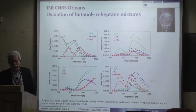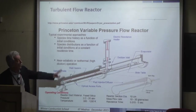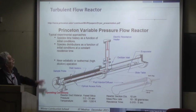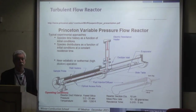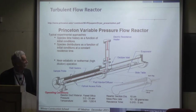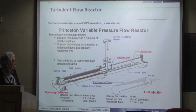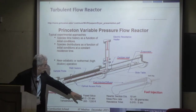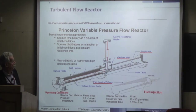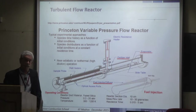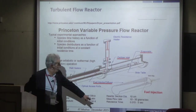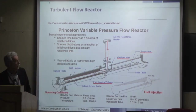After the jet stirred reactor, we move to the plug flow reactor. A very typical one is the Princeton variable pressure flow reactor, which has produced several experiments in the literature. Operating conditions go up to 10–20 atmospheres with a residence time typically of 120 milliseconds, which increases with pressure.